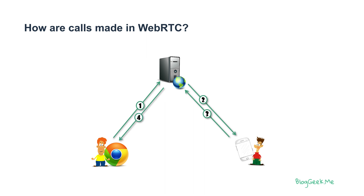These messages 1, 2, 3, and 4 are out of scope of WebRTC. WebRTC requires them in order to connect the call, but it doesn't state exactly how they need to be sent. It just says the component that needs to be there, which is SDP — Session Description Protocol. Once these messages are passed, the call can start and that is done directly across the browser.